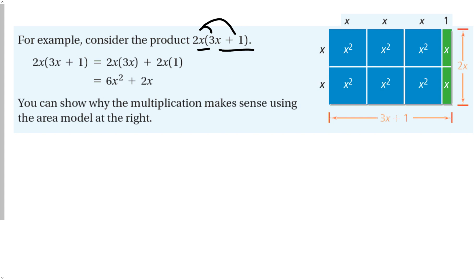You can see in this diagram: we have 2x up and down — an x and an x — and then 3x's plus 1 on the top row. As we multiply x times x, we get x squared, and 1 times x gives me x. If I count all of these, I have 6x squared and 2x, just like in the distributive property. It's easier to just multiply, but the drawing helps visualize what's going on.